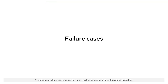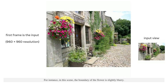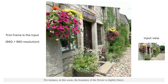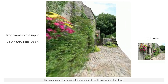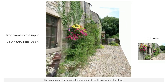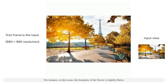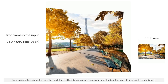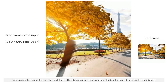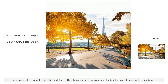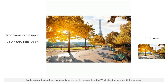Sometimes artifacts occur when the depth is discontinuous around object boundaries. For instance, in this scene the boundary of the flower is slightly blurry. The model also has difficulty generating regions around trees because of large depth discontinuity. We hope to address these issues in future work by segmenting the mesh sheet around depth boundaries.